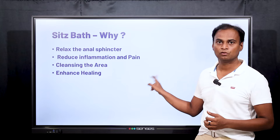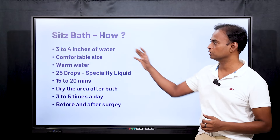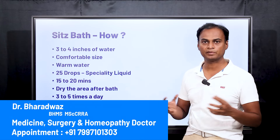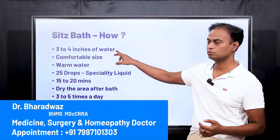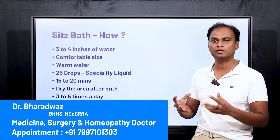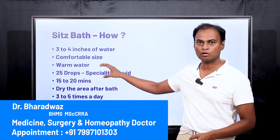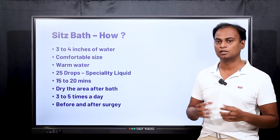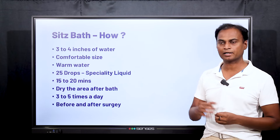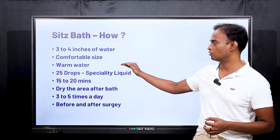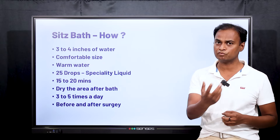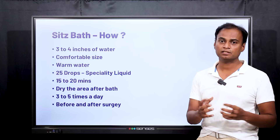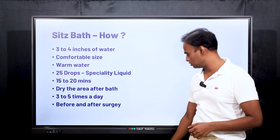We will now look into the proper, right way of doing a sitz bath. You have to take a tub of comfortable size — do not take too small a one — and fill it with water up to 3 to 4 inches so that your anal canal is completely immersed. You have to use warm water; do not use too hot or too cold water, as it will damage and irritate the anal canal, causing more pain and more contraction. The water should be warm and comfortable to you, as each person has a different comfort zone.